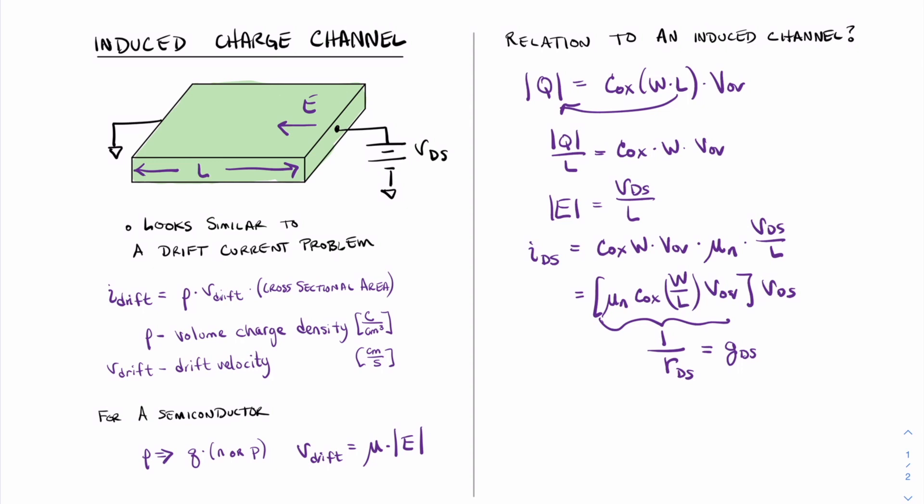To simplify matters a little bit more, we will also consider another relationship, and that is mu in Cox times width over length. And this relationship is known as the transconductance value kn.